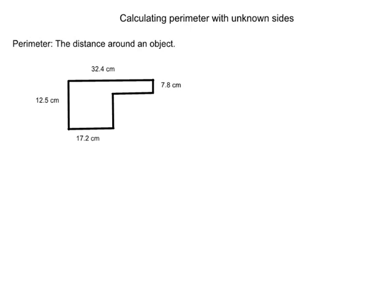Welcome. Today we're going to be calculating the perimeter with unknown sides. The perimeter is the distance around an object. In order to find the perimeter, all you simply have to do is add every single side of an object together.